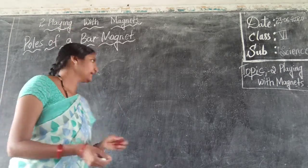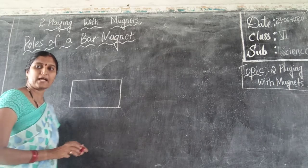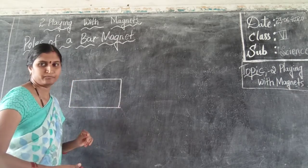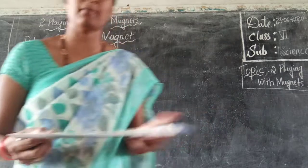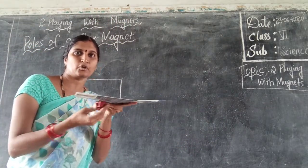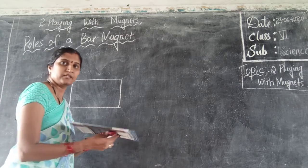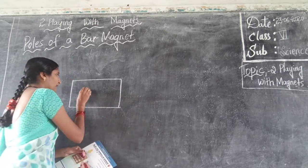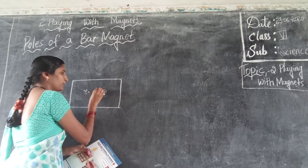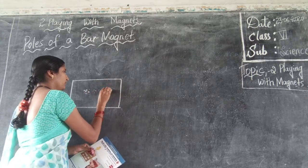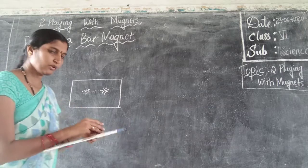After attracting the iron particles to the magnet, those particles should be removed separately and collected on a piece of paper. After collecting the iron particles on the paper, place the magnet below it and rotate it. When you rotate the magnet below, the iron filings change their position — more iron filings move towards the ends of the magnet, and only some particles remain in the middle.